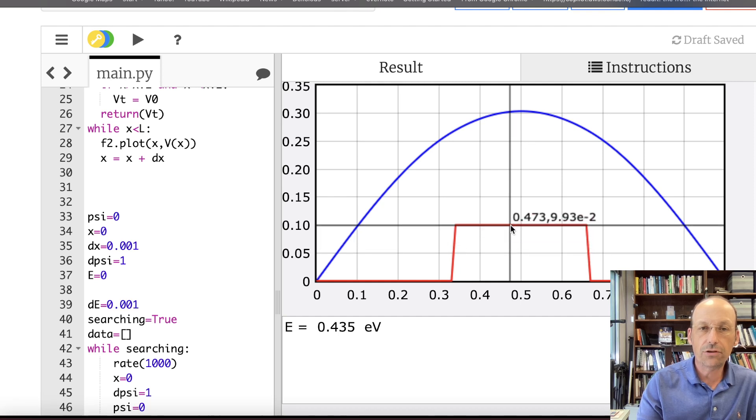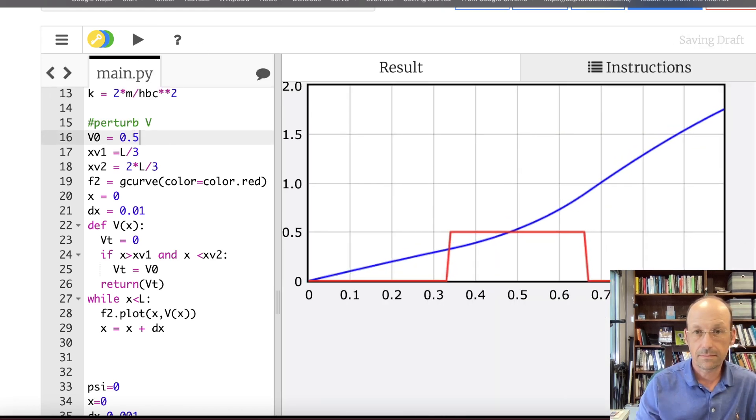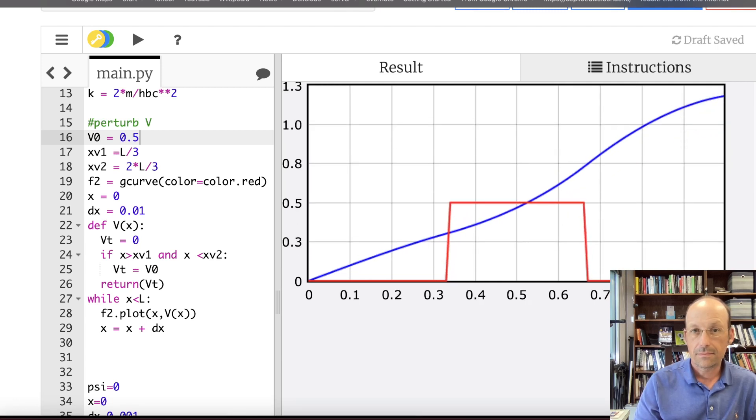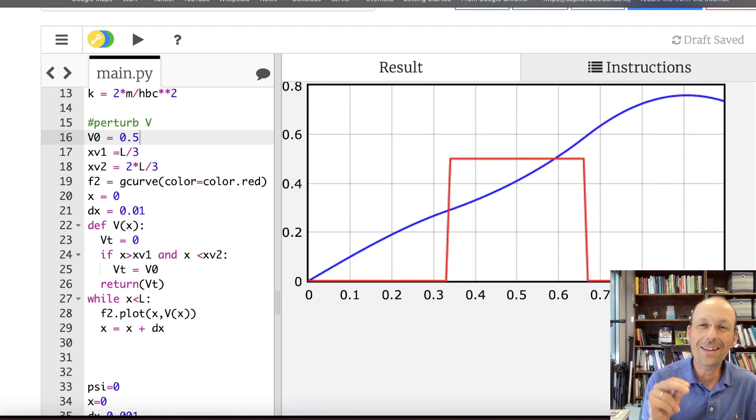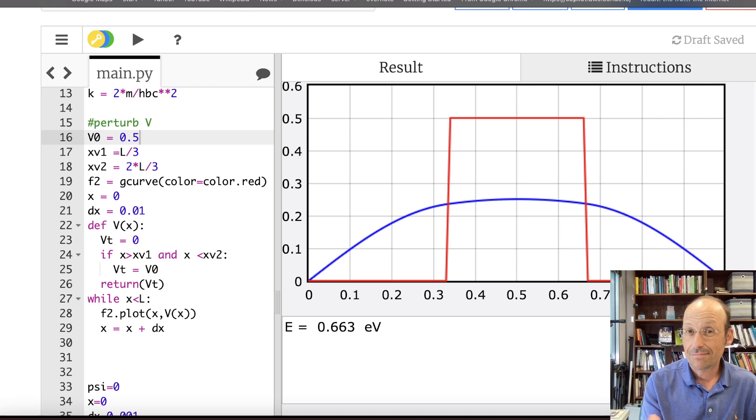So let's change this energy to something really large, right? So let's change it to something greater than this energy. I'm going to say V zero is 0.5. So you're actually getting tunneling here. But it works. And that's not the same potential. I mean, come on. That's pretty awesome.